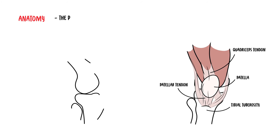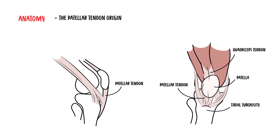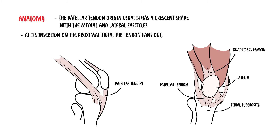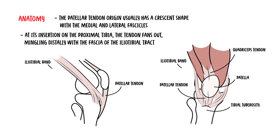The patella tendon origin usually has a crescent shape, with the medial and lateral fascicles attached to the patella more proximally than the central fascicles. At its insertion on the proximal tibia, the patella tendon fans out, mingling distally with the fascia of the iliotibial tract or band.